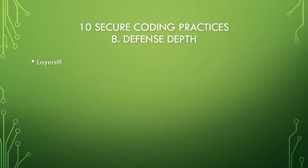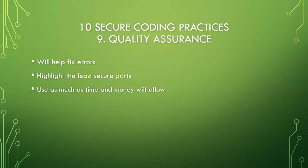Number eight is defense in depth. You want layers on layers on layers — as many layers to your program as possible, and that's going to increase your security. Number nine is quality assurance. This is basically checking your program for bugs, trying to break your program and seeing what happens. This is really going to help you fix errors and highlight the least secure parts of your program. You want to do this as much as possible.